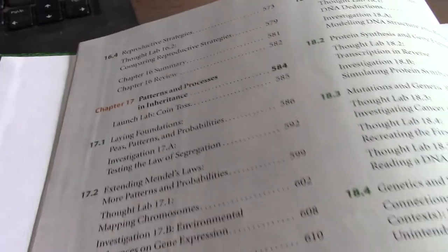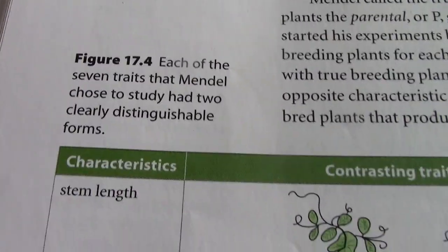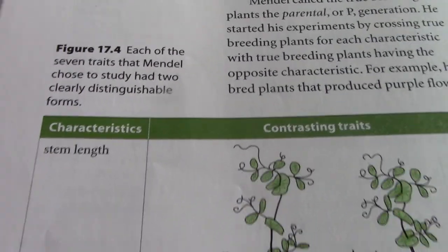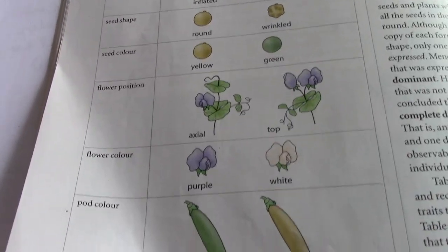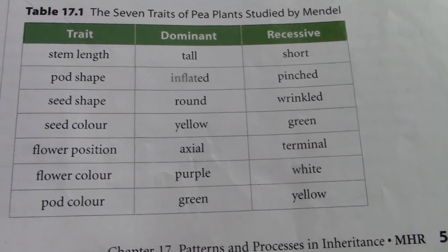Patterns of inheritance in McGraw-Hill starts on page 584. I'm also going to use the Nelson textbook quite a bit in this unit. Mendel looked at pea plants and examined seven main traits. This is figure 17.4 in your McGraw-Hill textbook — you can see stem length, pod shape, seed shape, and all that. It's also shown in table 17.1, listing all the different traits that he looked at.